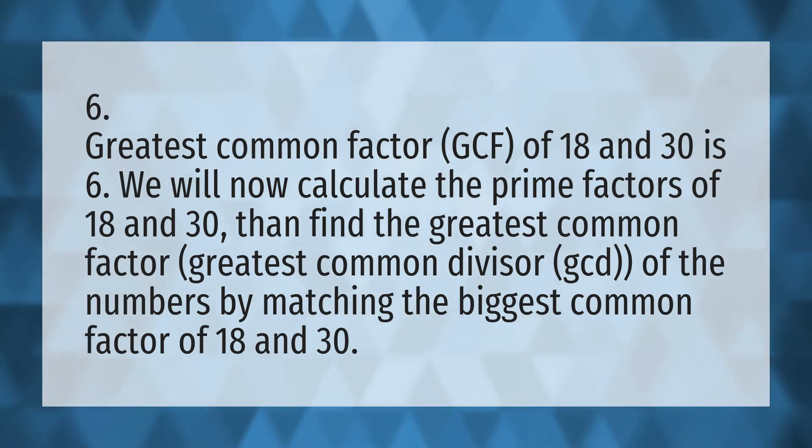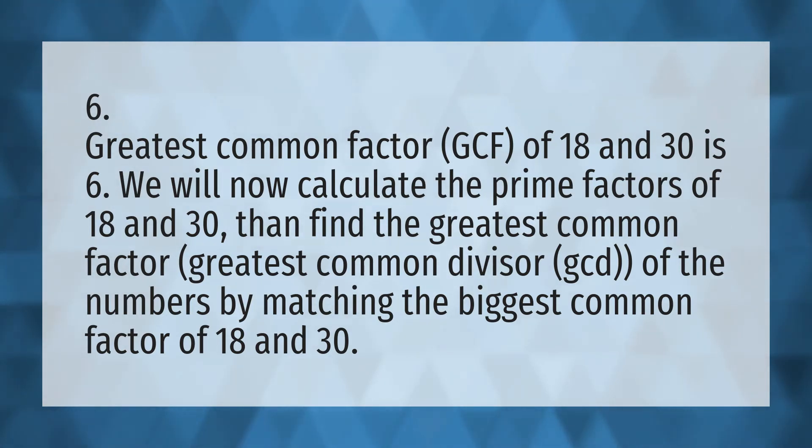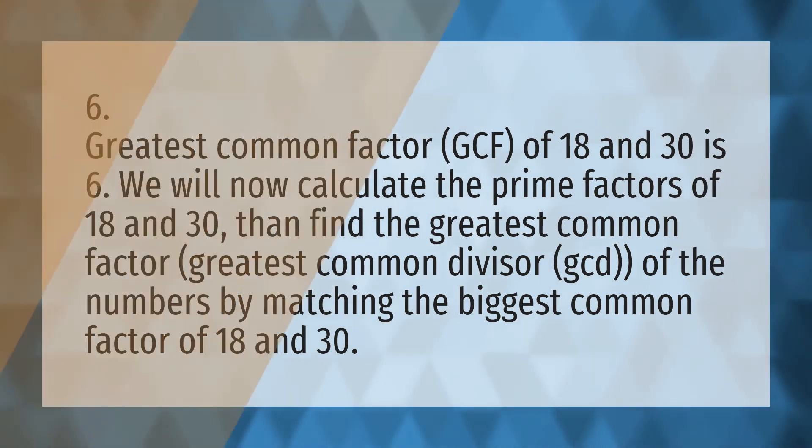The biggest common factor of 18 and 30 is 6. Our mission is to provide accurate answers — we believe that without knowledge, it is impossible to live a balanced life.